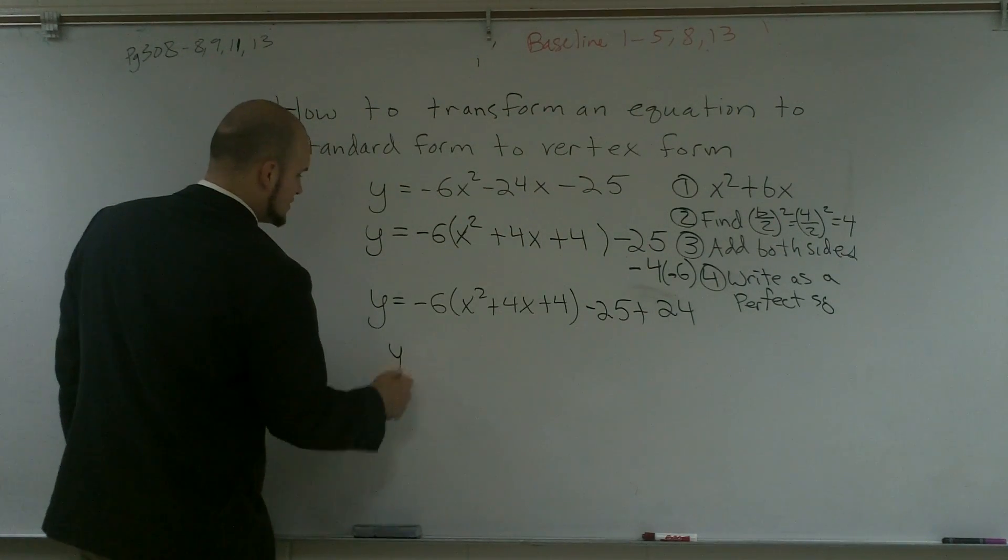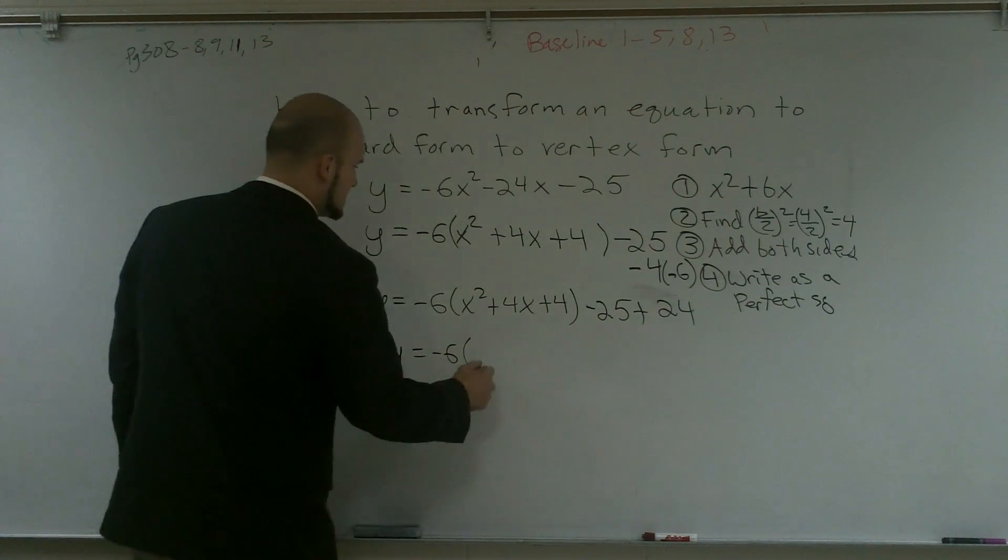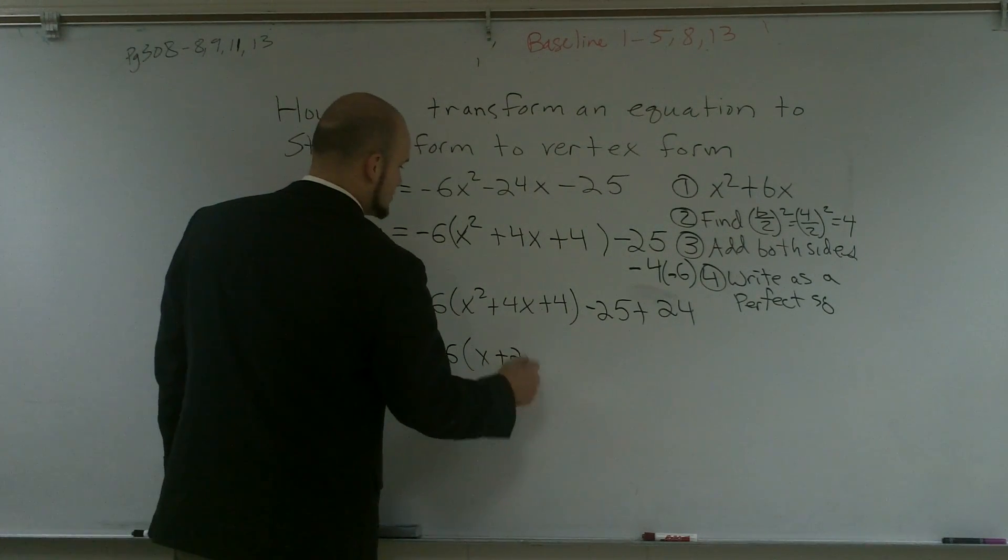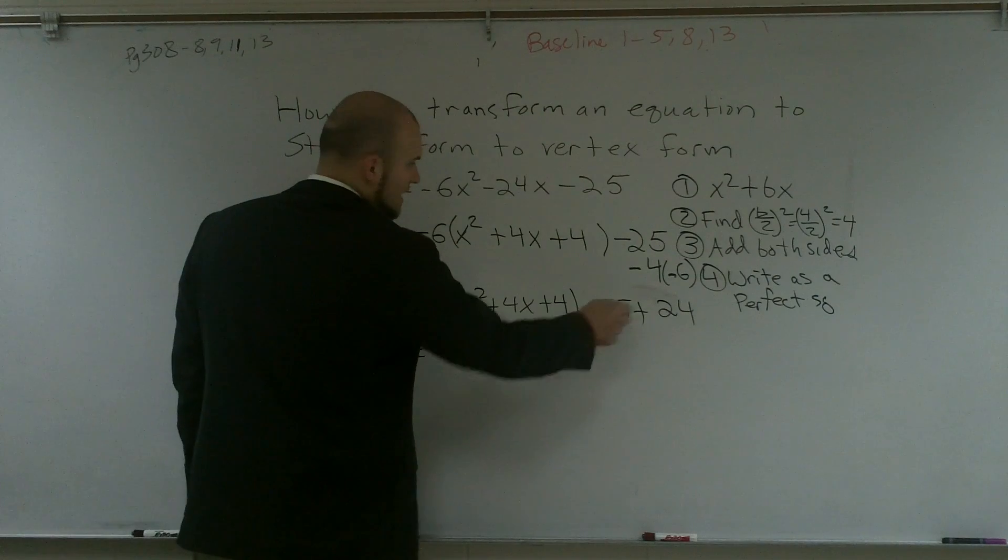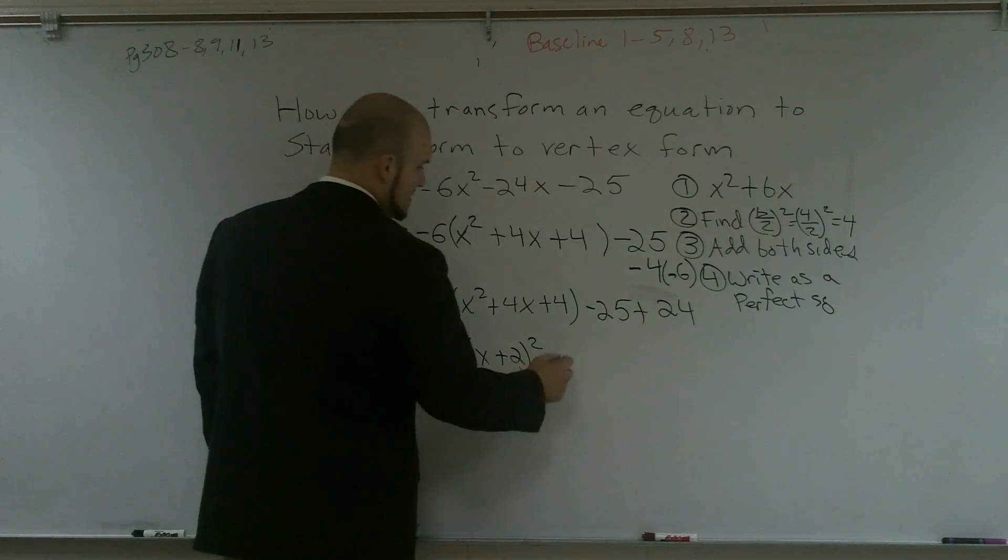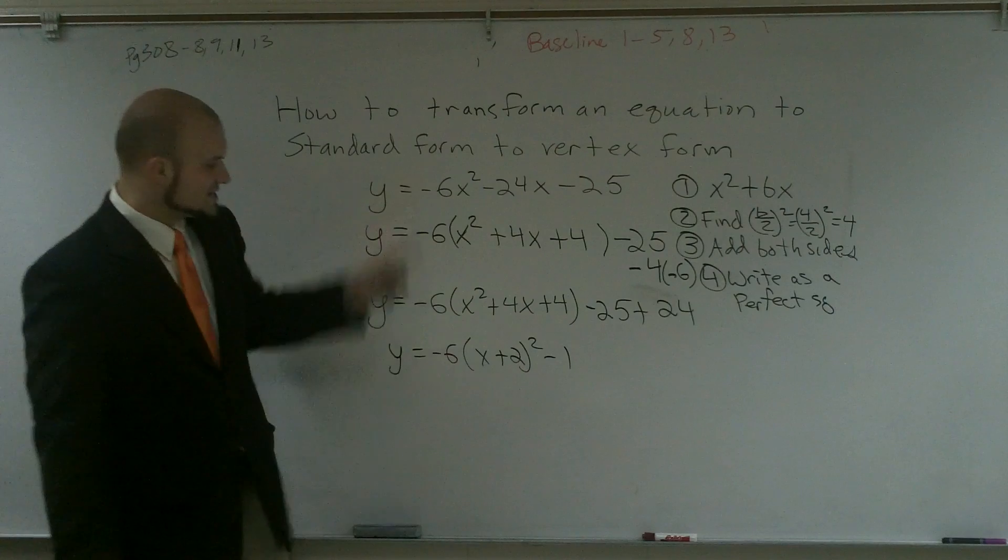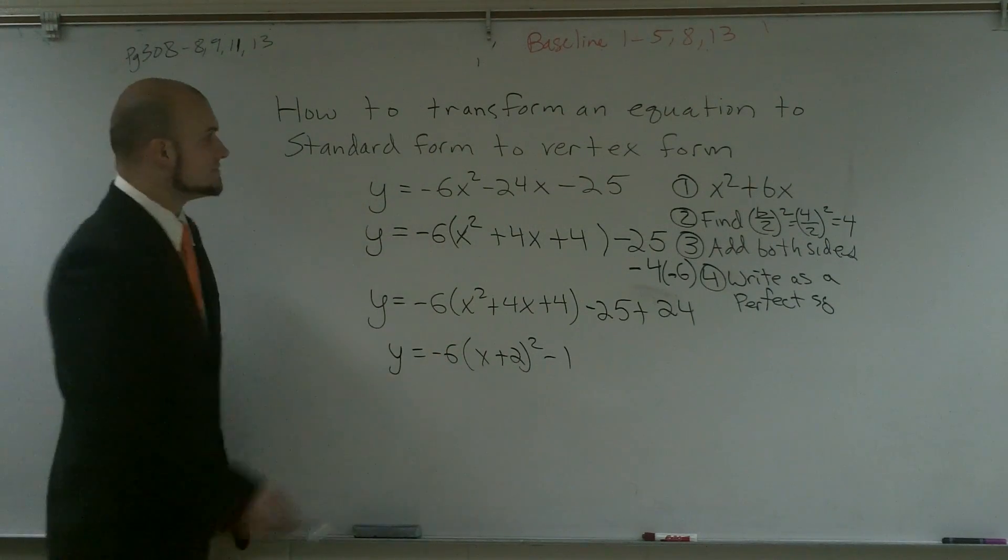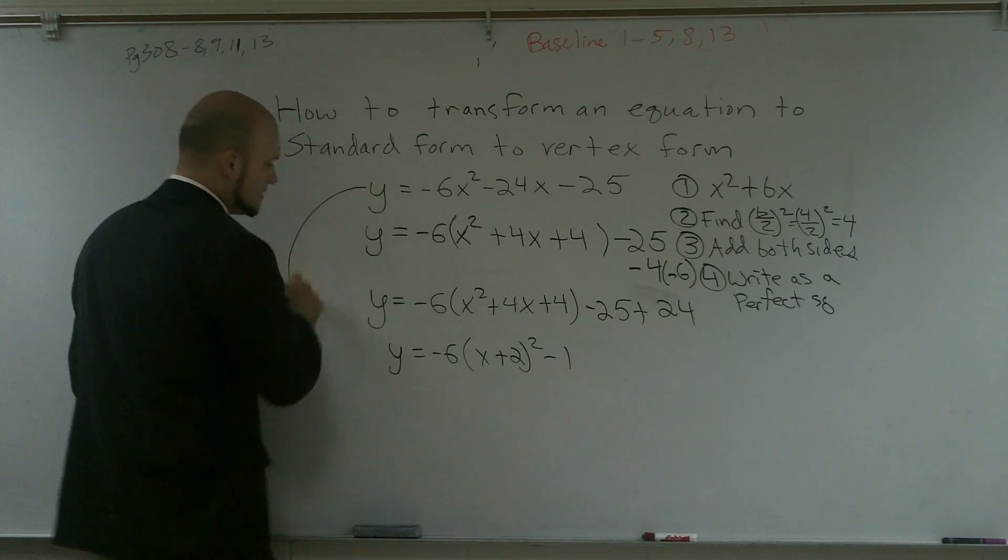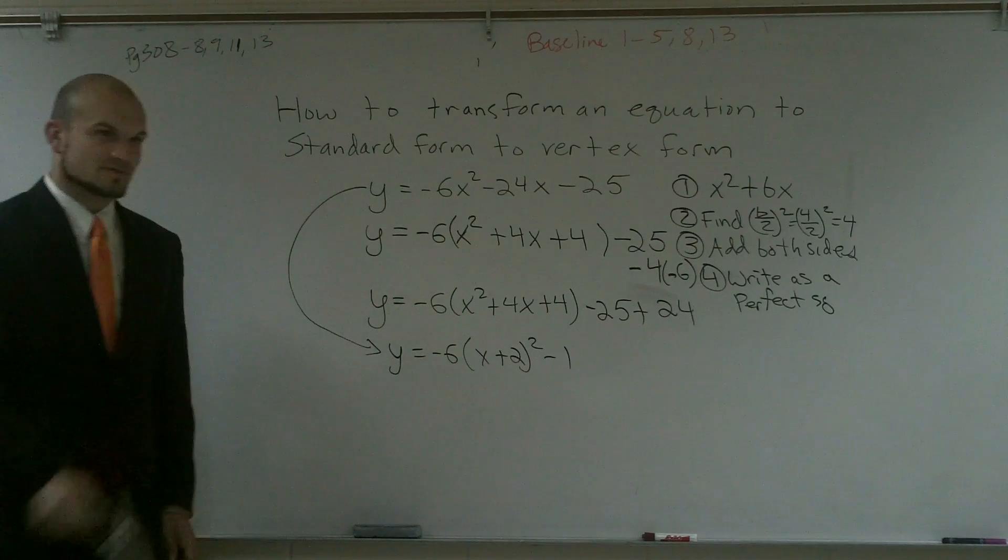So my final solution, y equals negative 6 times x plus 2 squared, and negative 25 plus 24 is going to be minus 1. So now it is in vertex form. I've just completed it from standard form and now I'll put it to vertex form.